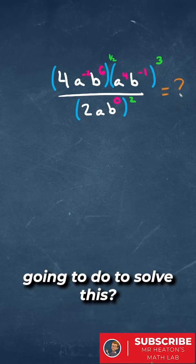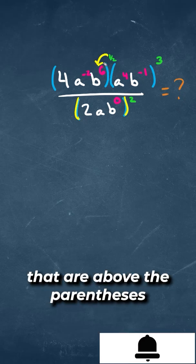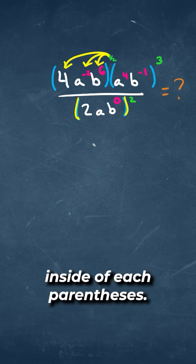What's the first step you're going to do to solve this? Since we have multiple parentheses, we're going to take the exponents that are above the parentheses and multiply it to each one of our variables inside of each parentheses.